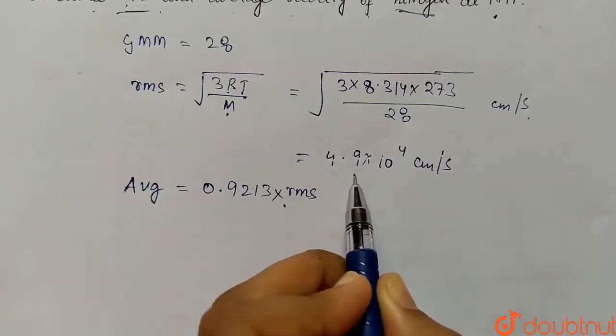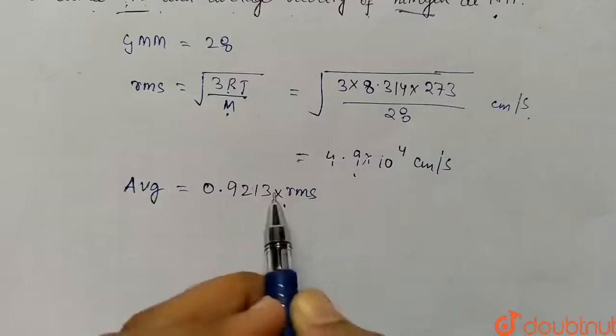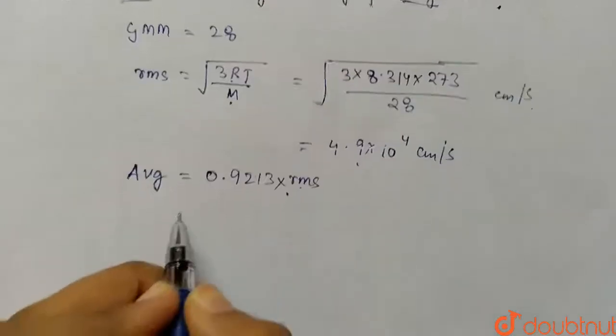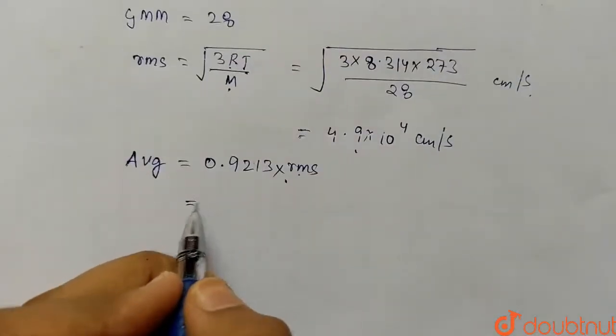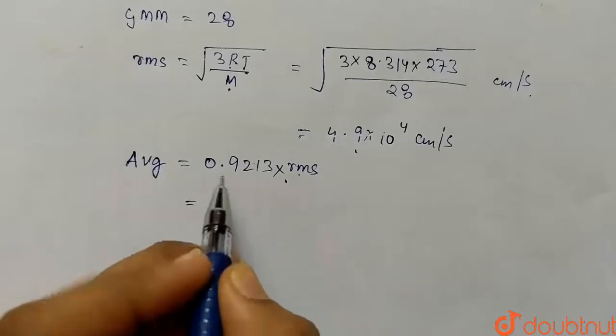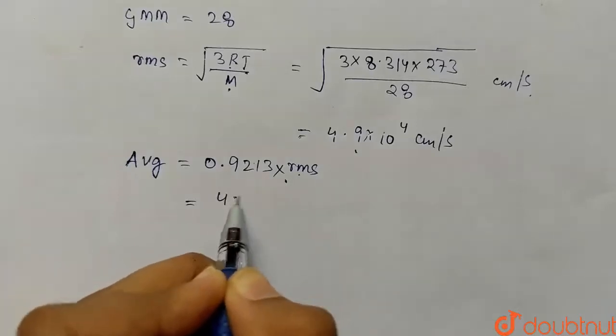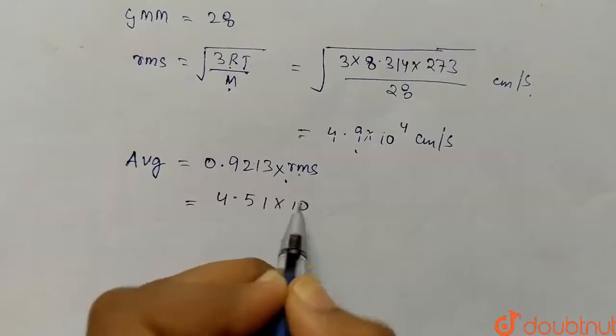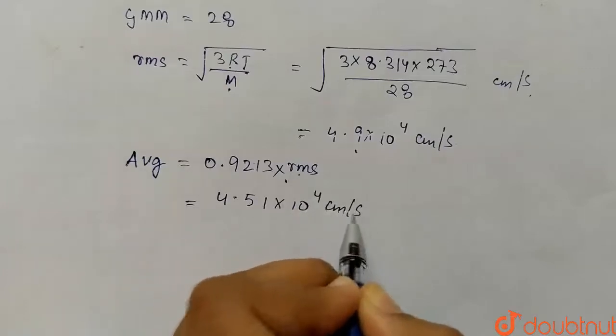Since it is 0.9213 times RMS velocity and we have this RMS velocity, let's put this value here and calculate the average velocity. The average velocity will come out to be 4.51 into 10 to the power 4 centimeter per second.